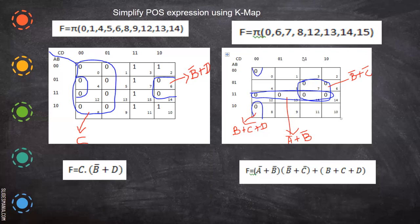Now let us take another example. For positions zero, six, seven, eight, twelve, thirteen, fourteen, fifteen — in these combinations you substitute zeros. So for zero: zero, for six: zero, for seven: zero, for eight: zero, for twelve: zero, for thirteen: zero, for fourteen: zero, for fifteen: zero.